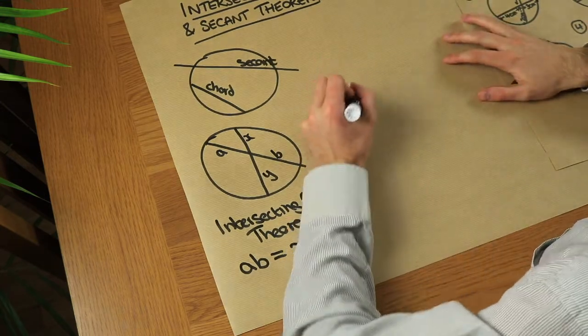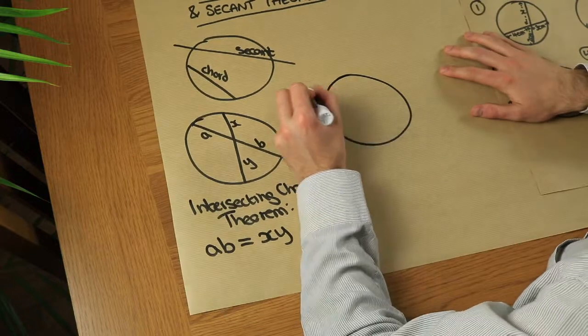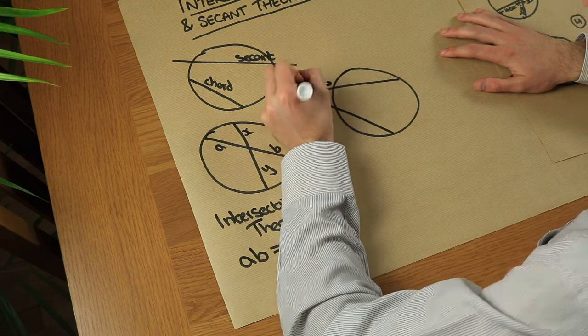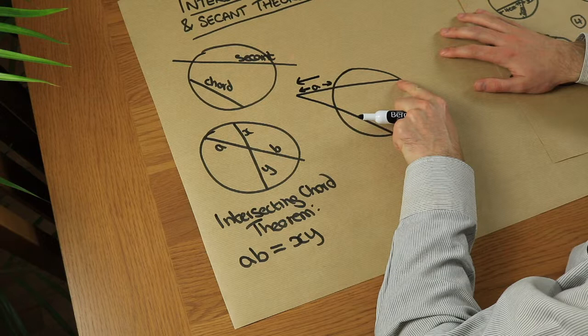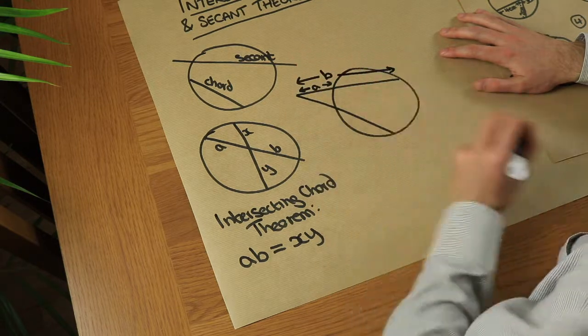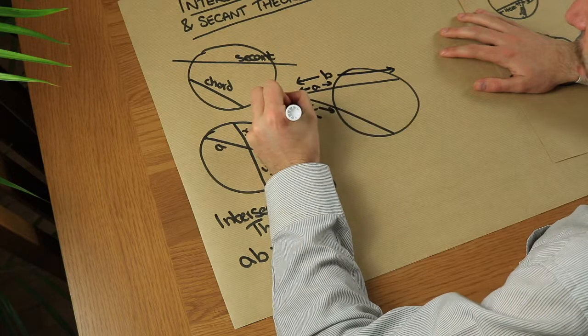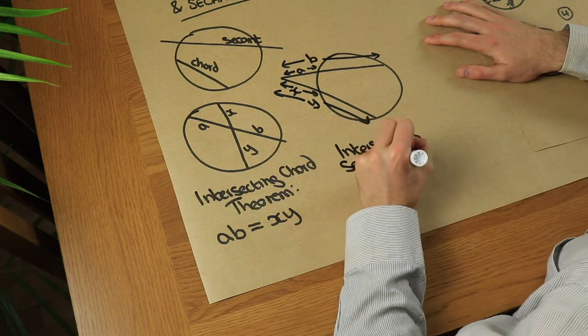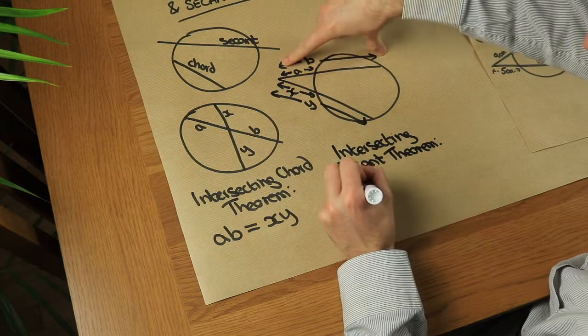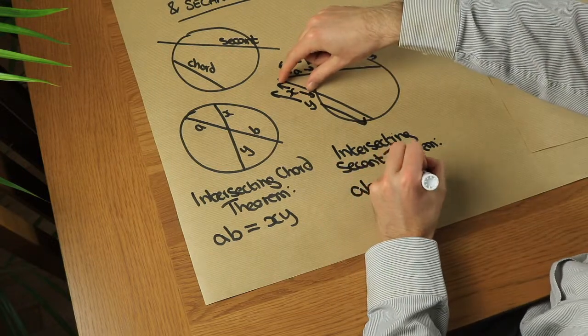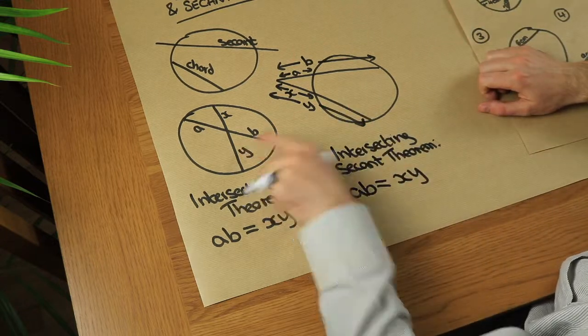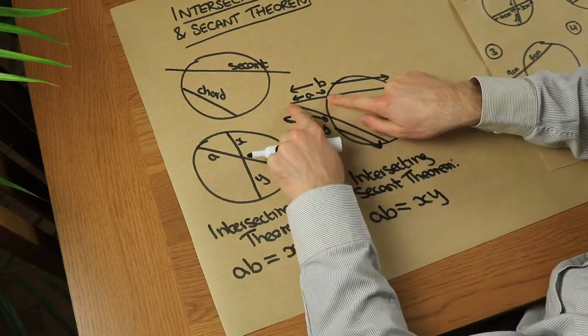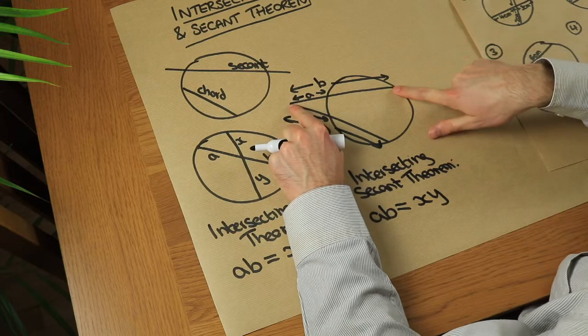Now the intersecting secant theorem is a bit more tricky. If we have two secants like this, and let's say that this length here is a, but the length of the entire secant up to this point here on the circumference is b, and this length here is x and this whole length here is y, then the intersecting secant theorem states that again a times b is equal to x times y. Now the reason this is slightly different to this is that it's not that times that, as we would have with the two parts of the chord. It's actually this bit here outside the circle times the full length of the secant.